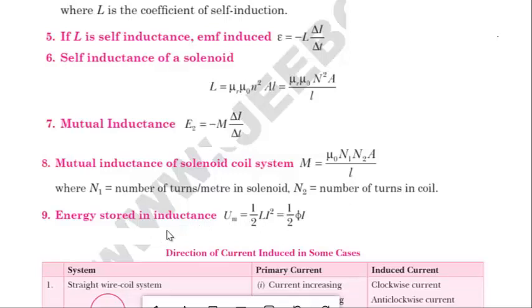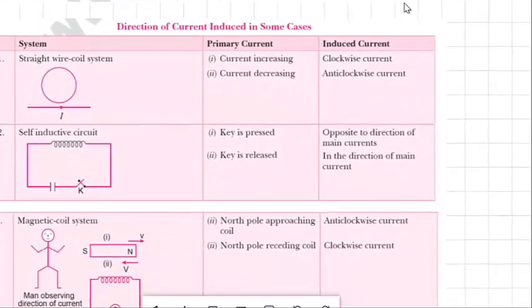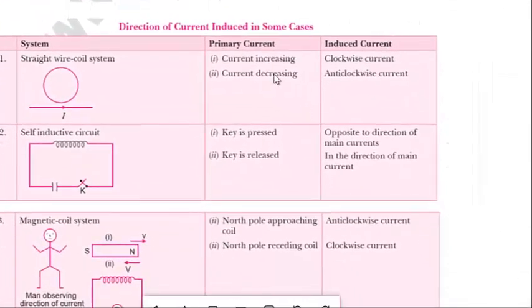Next is energy stored in the inductance: U equals half LI², or equivalently half φI. That is the energy stored in the inductor.